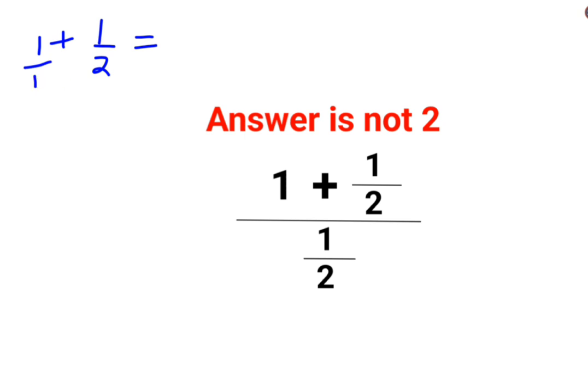Now there is no denominator to 1, means it is 1. Now in order to do the addition, you need to make the denominators equal. So how do I make 1 as 2? I need to multiply by 2.